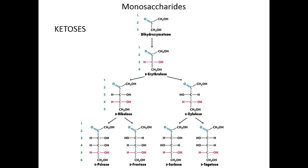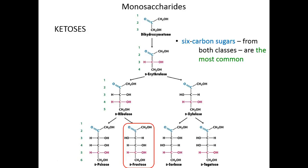The ketoses also feature a carbonyl carbon, but that's on their second carbon, because that carbonyl carbon is linked to an alcohol group. That's what makes the ketoses different — the carbonyl carbon is carbon number two. We see dihydroxyacetone here, but more relevant to our everyday experience, fructose is a member of the ketoses — fructose of high fructose corn syrup, a sugar we commonly find in our foods. Six-carbon sugars from either class, both ketoses and aldoses, are the most naturally occurring and what we encounter most in metabolism.